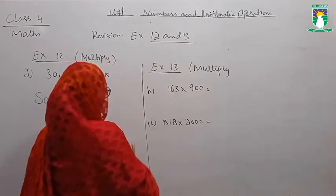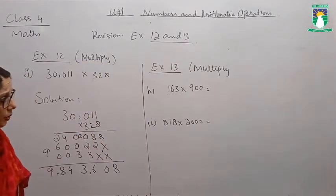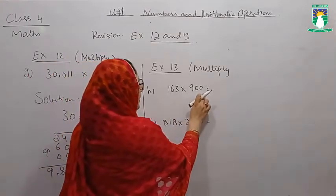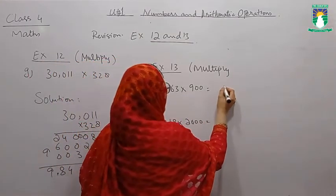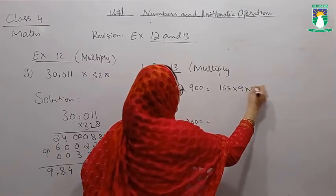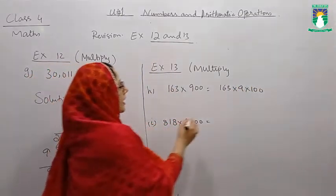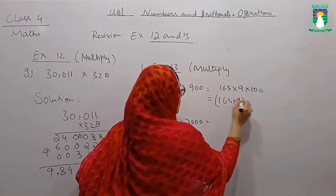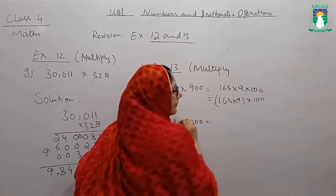What did you do in this? It is long multiplication. We have to avoid this situation. In 900, we have to break it. 163 multiplied by 900, we have to make it 163 times 9 times 100.